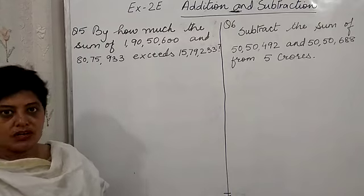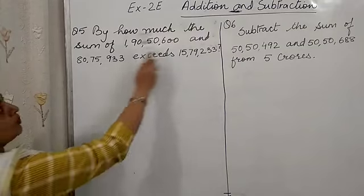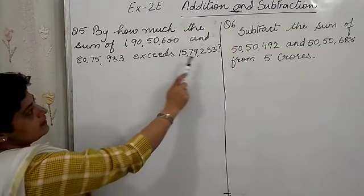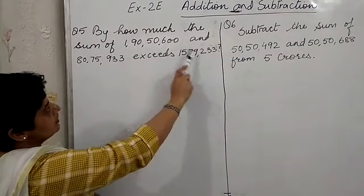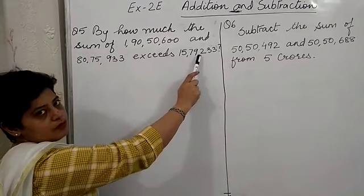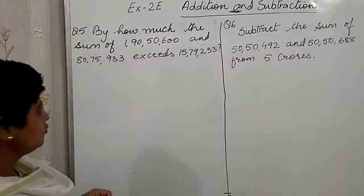Now let us read this question in another way. By how much the sum of number 1 and number 2 exceeds number 3? So in this case, we will be adding number 1 and number 2. We will find the sum and then we will subtract number 3 from the sum. Let us do it.